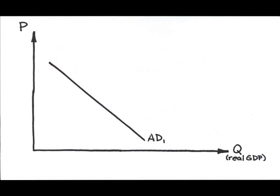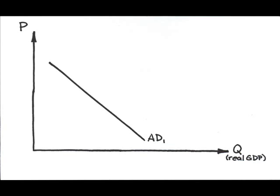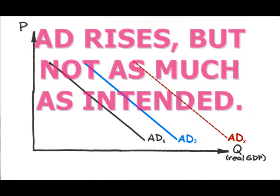You might see incomplete crowding out, where the increase in government spending is partially offset by reductions in household and investment spending. If this occurs, there's some net increase in spending, although not as much as the government had intended.